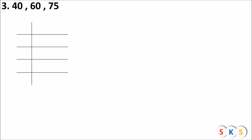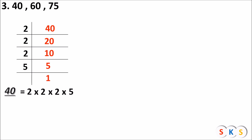Next question: Find the prime factor of the first number, which is 40. 40 is divisible by 2, which is prime. 40 ÷ 2 = 20, 20 ÷ 2 = 10, 10 ÷ 2 = 5, 5 ÷ 5 = 1. So the prime factor of 40 is 2 × 2 × 2 × 5.